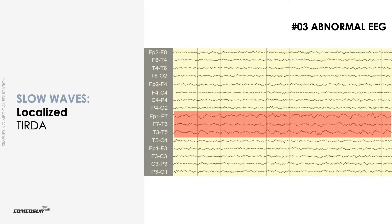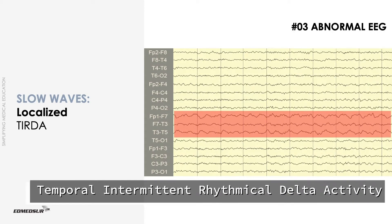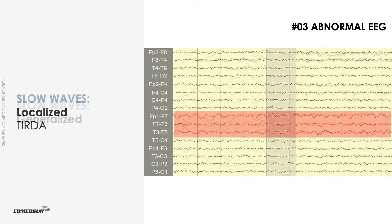Focal polymorphic delta activity needs to be differentiated from temporal intermittent rhythmic delta activity, a distinct pattern that has a strong association with temporal lobe epilepsy. It often occurs in runs lasting 4 to 20 seconds, and in association with interictal epileptiform discharges.